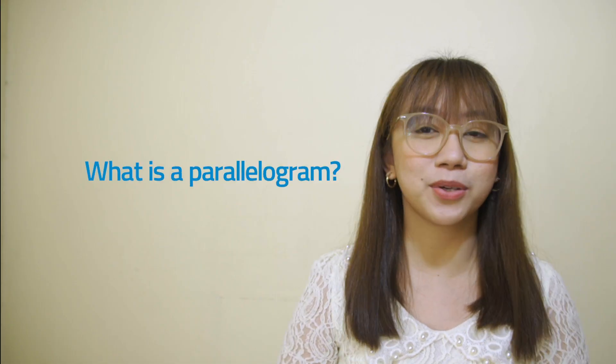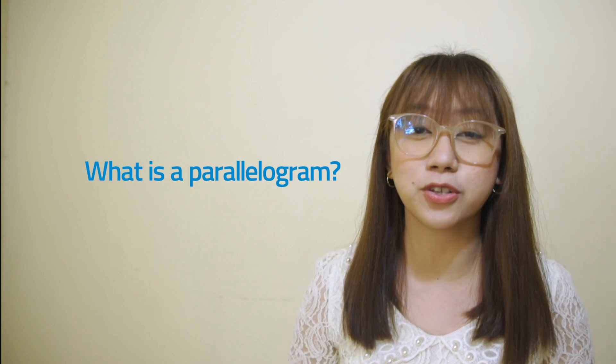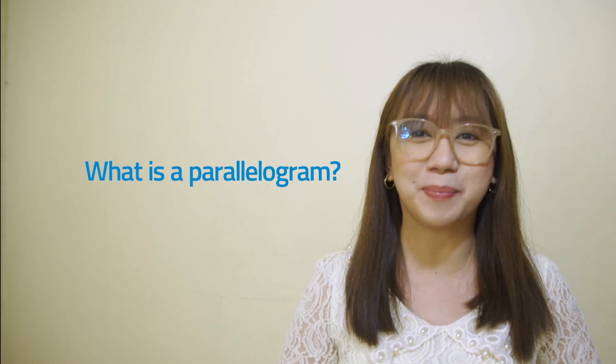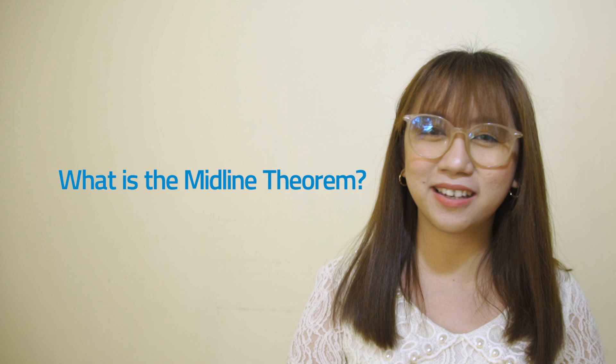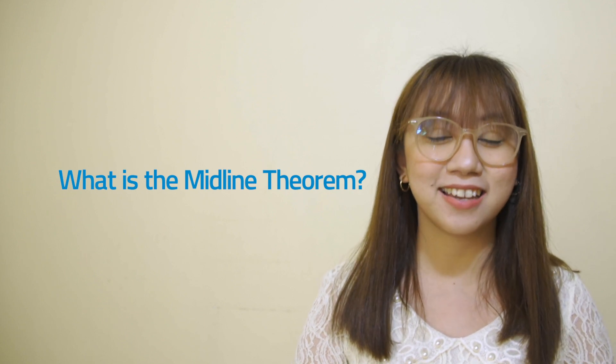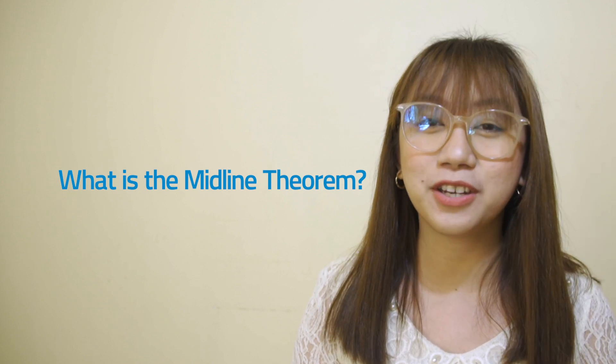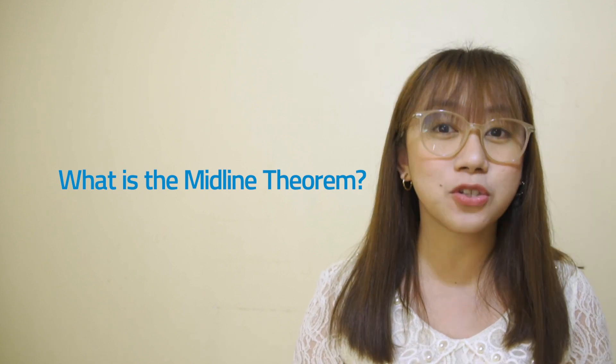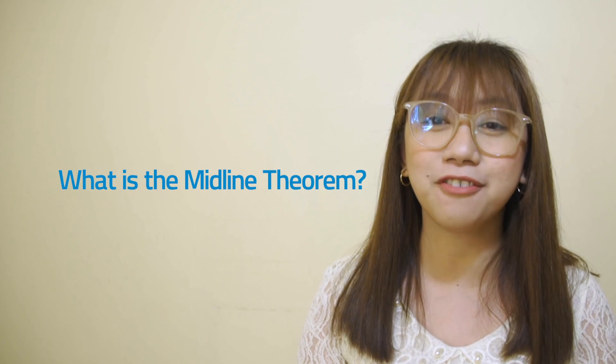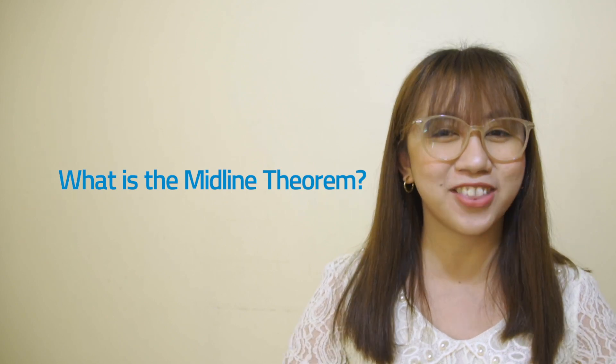That was fantastic, students! Now let's go back to our two questions earlier. A parallelogram is a quadrilateral with two pairs of opposite parallel sides. The mid-segment or midline theorem states that the midline of a triangle is parallel to and half as long as the third side.